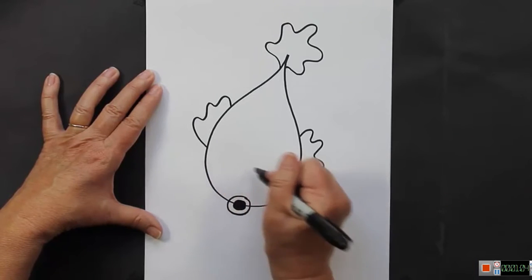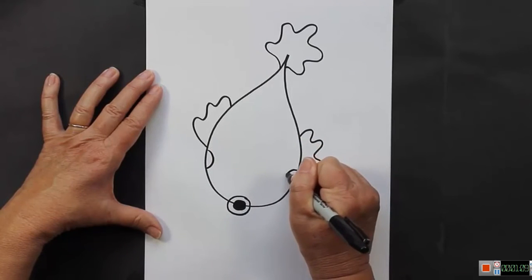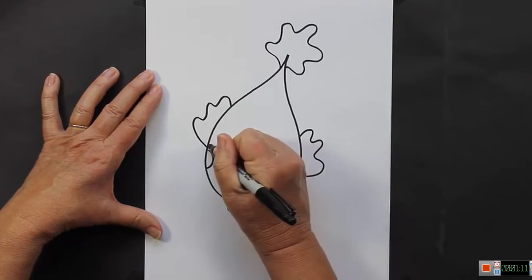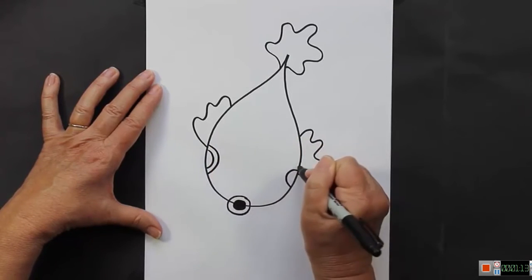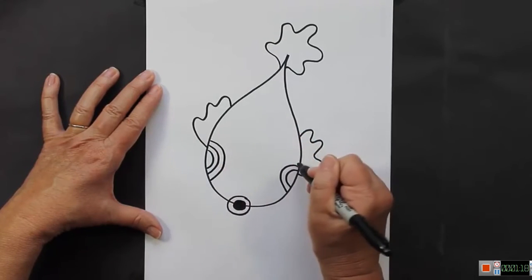Now we're going to come back up here to make some eyes. So we're going to make some semi-circles, larger semi-circles, and even larger semi-circles.